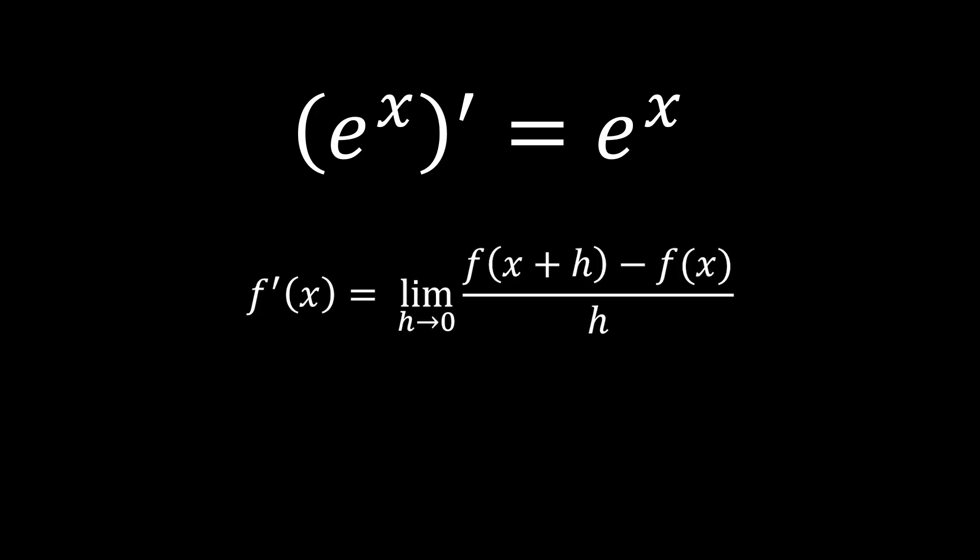To prove this, we'll utilize the limit definition of the derivative formula and the fact that the limit of 1 plus n to the power of 1 over n as n approaches 0 is defined as Euler's number e.